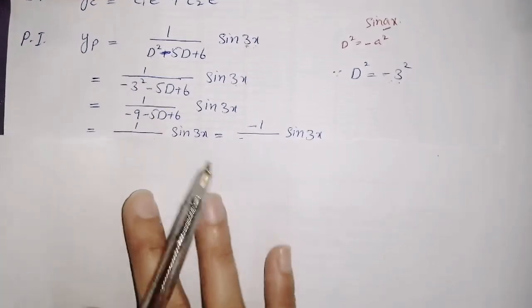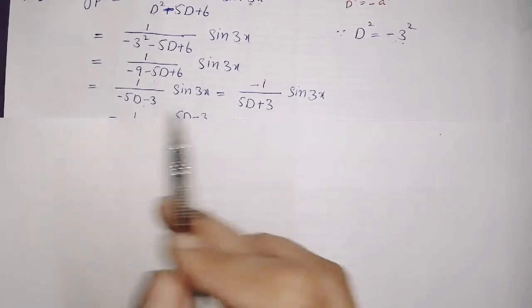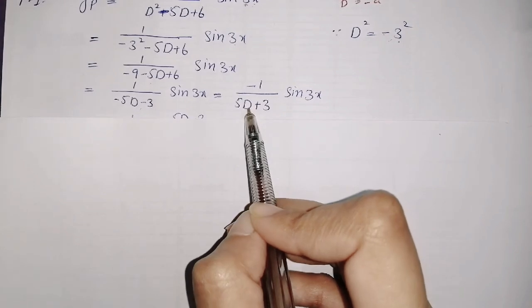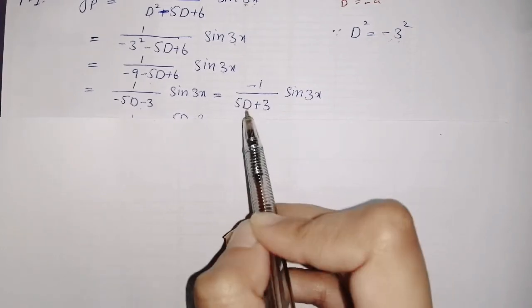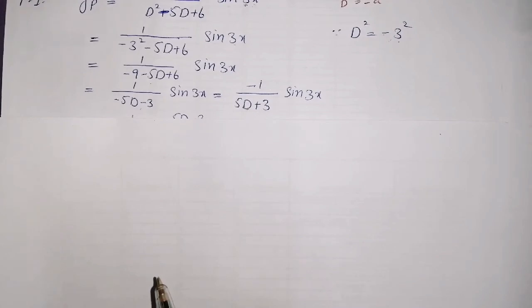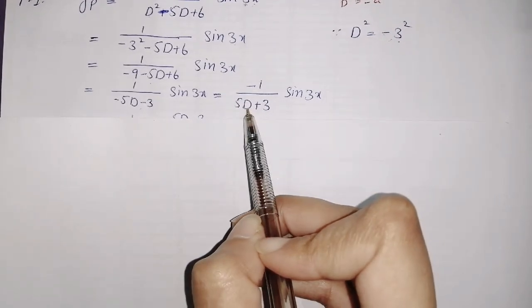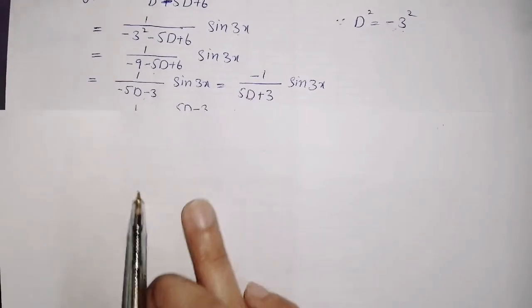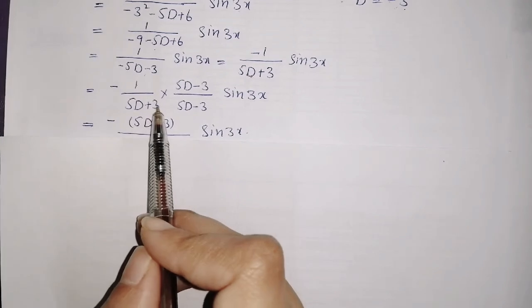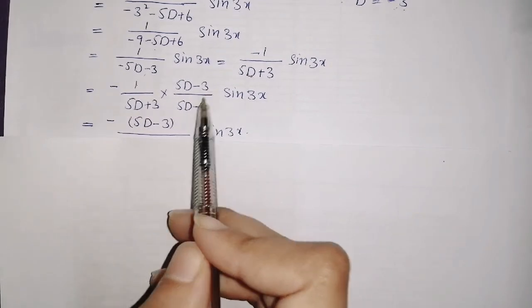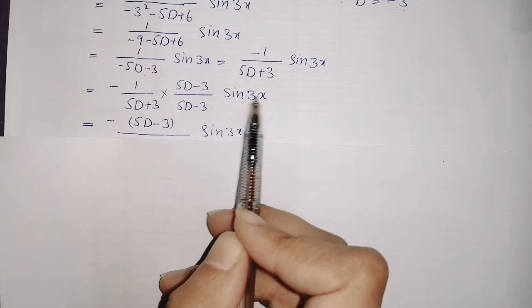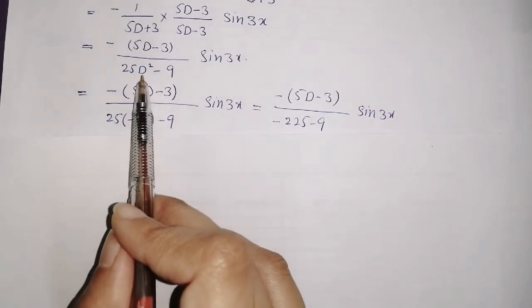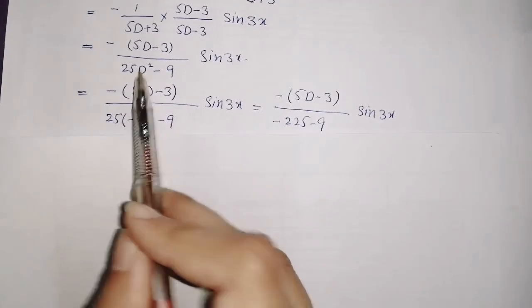Now to remove the D remaining in the denominator, we multiply by its conjugate. We multiply and divide by the conjugate so that D² appears again in the denominator. The term was −1/(5D + 3), so multiply and divide by (5D − 3), and sin 3x remains as it is. After simplifying, D² appears again in the denominator.